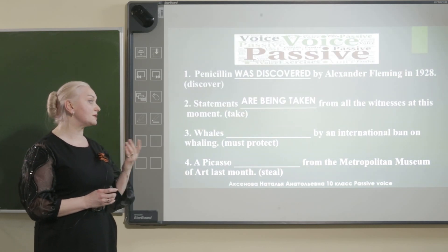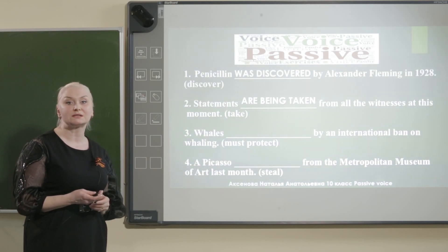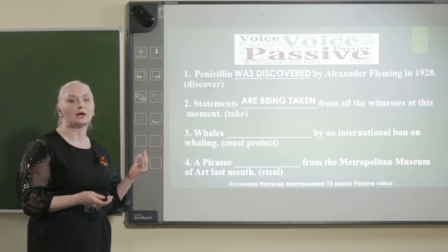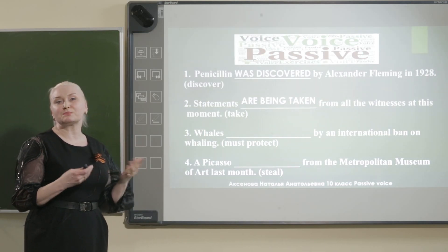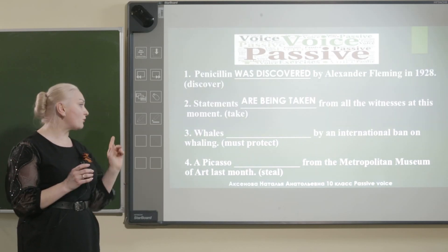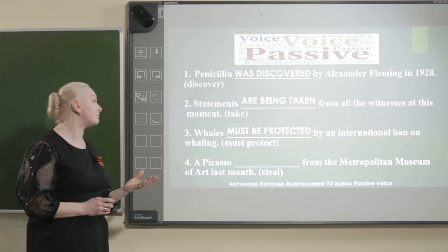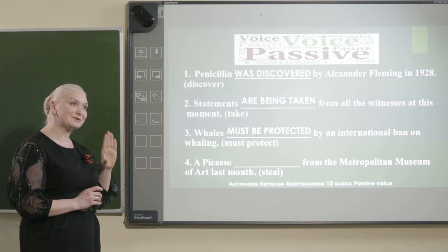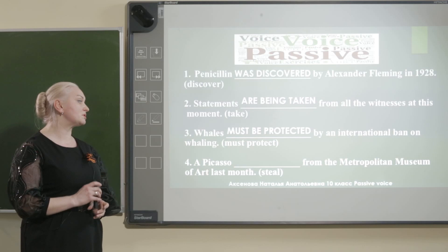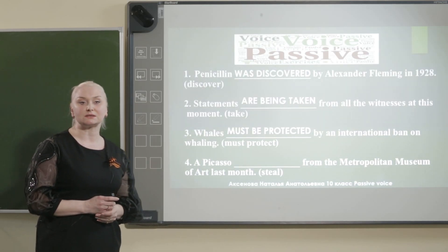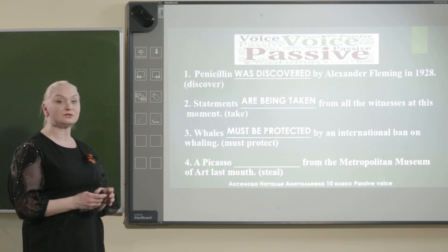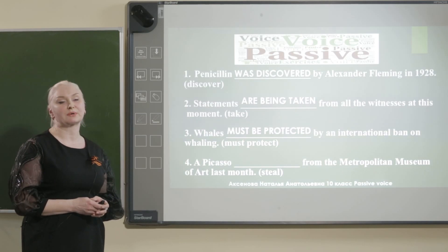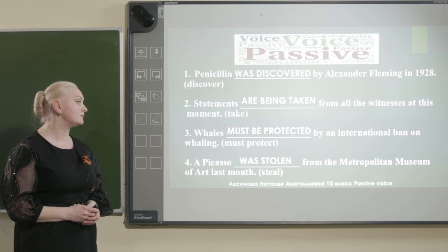The next: whales — by an international ban on whaling — and 'must protect'. В предложении запрещено охотиться на китов. 'Must protect' — that's a modal verb, and the infinitive form of 'to be' should be used here. So, whales must be protected by an international ban on whaling. Киты должны быть защищены. The last sentence: a Picasso [was stolen] from the Metropolitan Museum of Art last month. Last month means past tense — Picasso was stolen from the Metropolitan Museum.